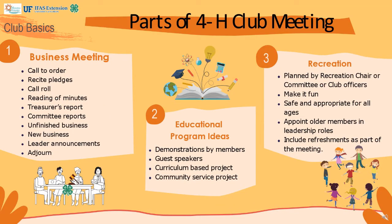During the business meeting, club officers should lead. The president calls the meeting to order and members recite the pledges. The secretary calls roll and reads the minutes of the previous meeting. The treasurer gives the treasurer's report, and any committees give their committee reports. Once all reports have been read, the club addresses any unfinished business before moving on to new business. Once the leader provides announcements, you will adjourn the business portion. The business portion includes plans being made, fundraisers or community service being planned, and events being held or attended.